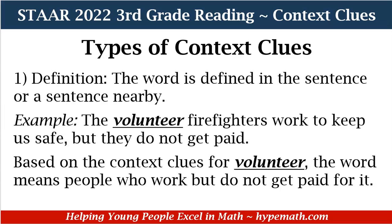Let's go over the different types of context clues. First, we have definition — that is when the word is defined in the sentence or a sentence nearby. For example, the sentence is: 'The volunteer firefighters work to keep us safe, but they do not get paid.' Based on the context clues for volunteer, the word means people who work but do not get paid for it. 'They do not get paid' is the context clue for volunteer.